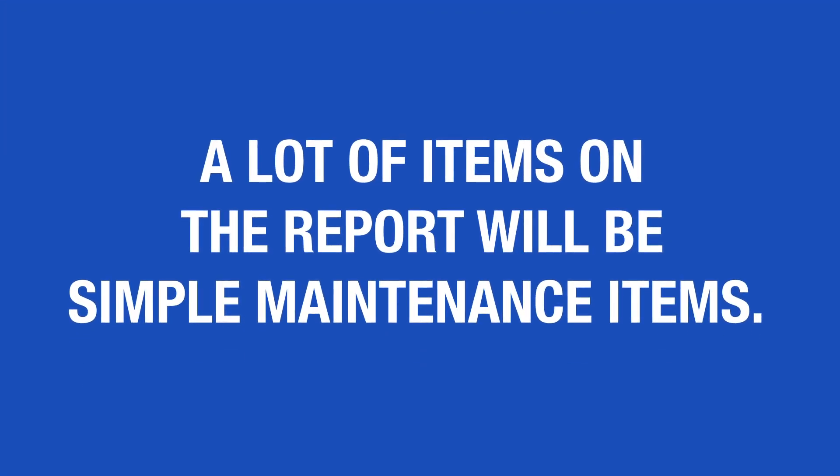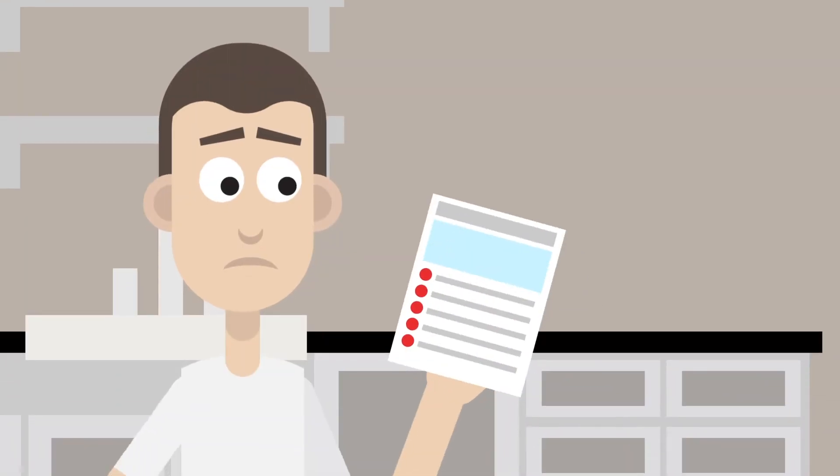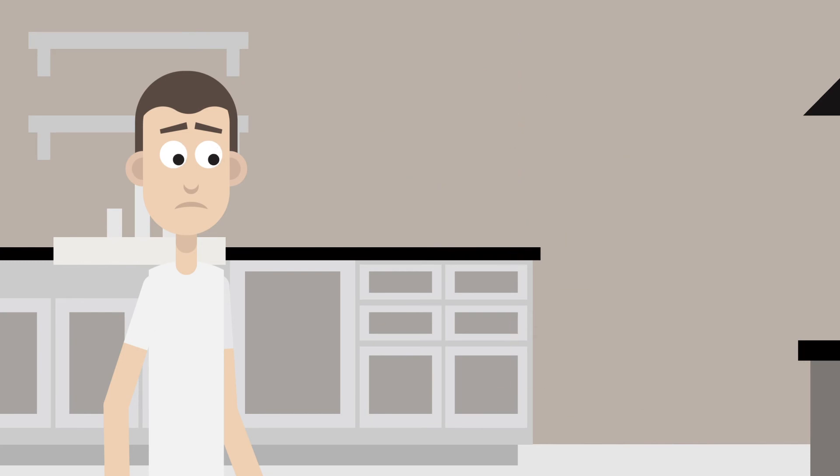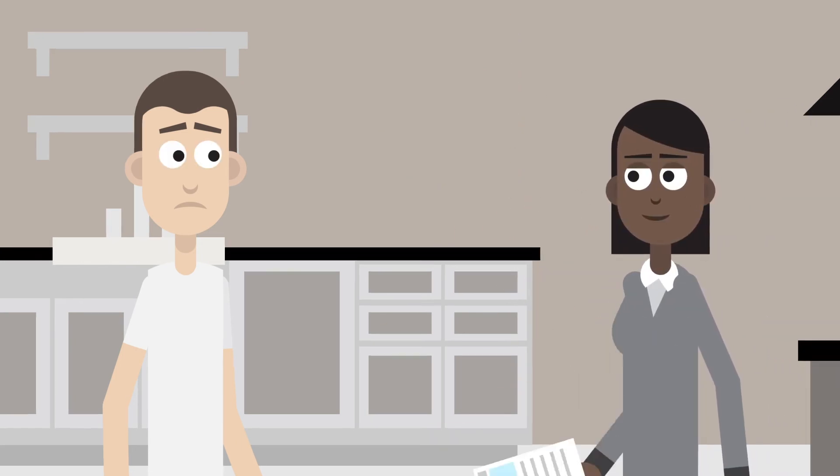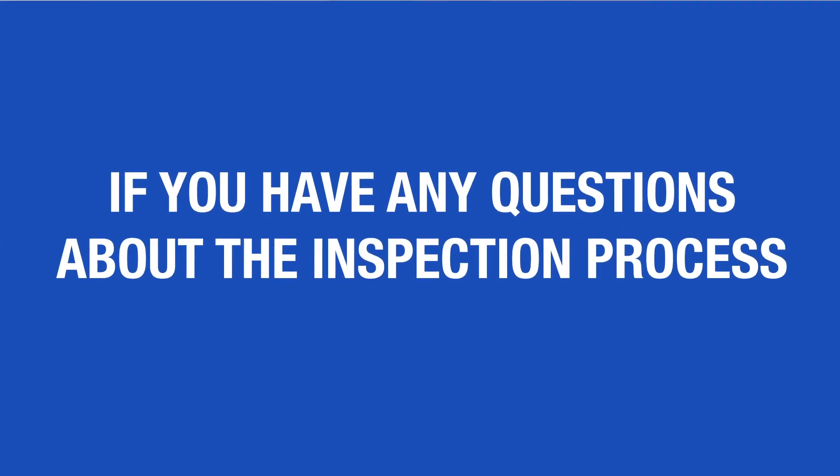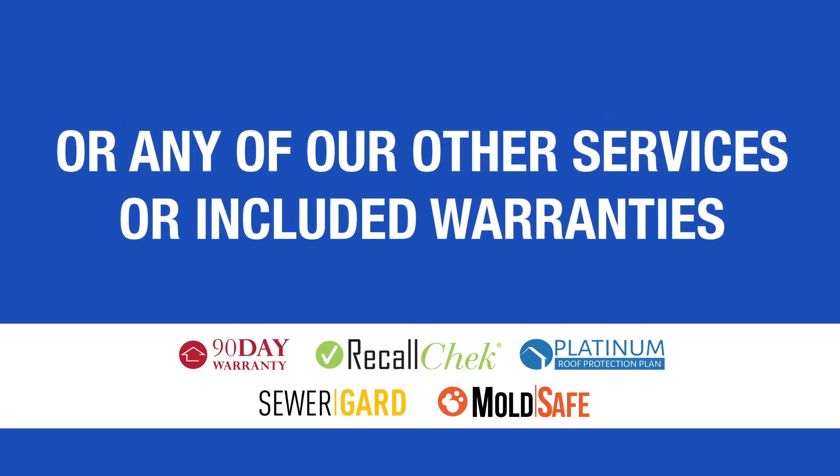A lot of items on the report will be simple maintenance items. Make sure you concentrate on any items you feel are important. Everything in a home can be fixed, and this is where your real estate agent comes in. They will help you sift through the list and prepare a response. If you have any questions about the inspection process or any of our other services or included warranties, contact Hansen Home Inspections today.